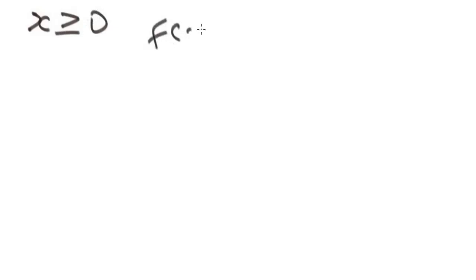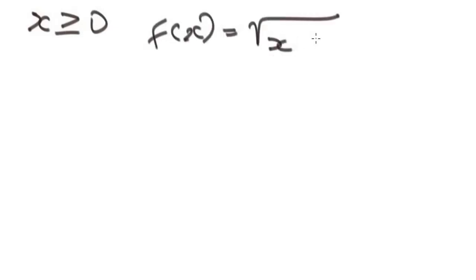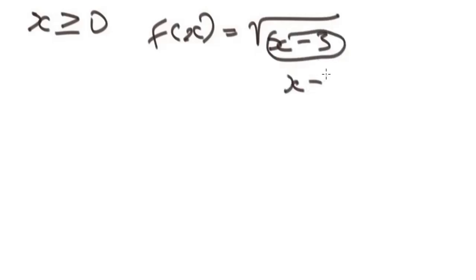Let's take a simple example by giving f of x equals the square root of x minus 3. To find the domain, you take the expression under the radical and set it up as x minus 3 greater than or equal to zero.